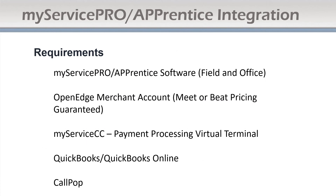Requirements to get started: you need to have the MyServicePro Apprentice software and an OpenEdge merchant account. We use interchange-plus pricing, so we guarantee you'll get a good price with our software. For those of you currently using Cayenne, we'll just be converting you over to OpenEdge — it's the same company, GPI, so no issues there, very simple. You'll also need the MyServiceCC payment processing virtual terminal for management of your payments, and it's better if you're integrated with QuickBooks Online and CallPop.